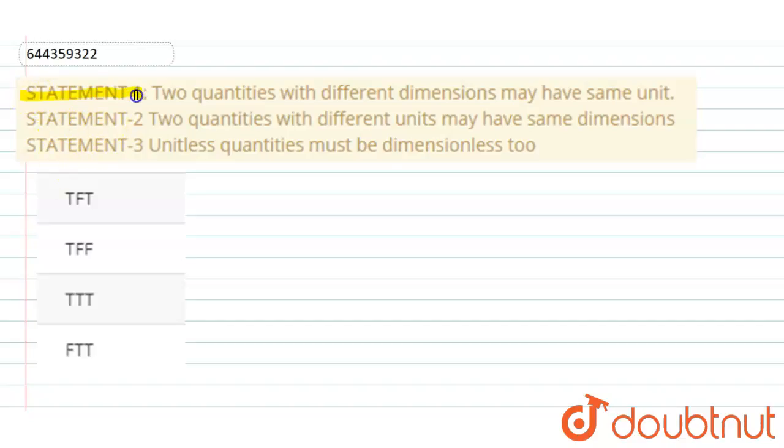So here is the question. We have three statements: statement 1, statement 2, and statement 3. We have to find which statement is true and which statement is false. According to this true or false, we have to find the correct options.